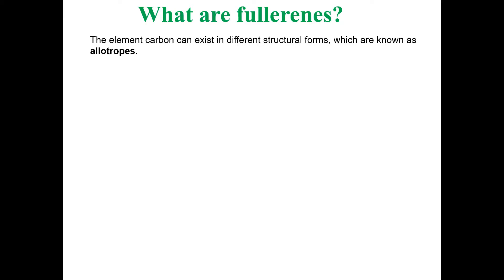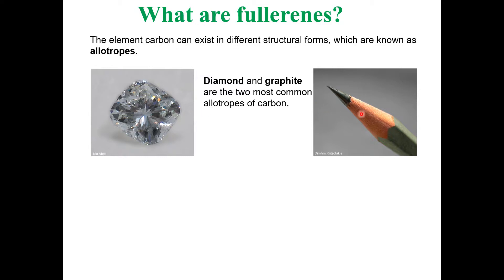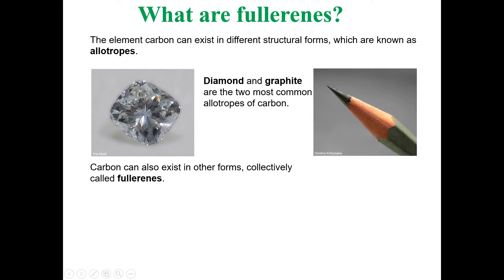The element carbon can exist in different structures, which are known as allotropes. The well-known allotropes of carbon consist of diamond and graphite. Along with those, we have another allotrope of carbon that is called Fullerenes.